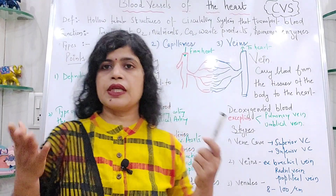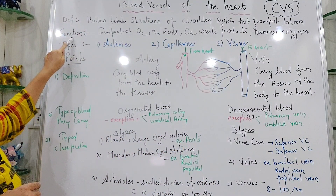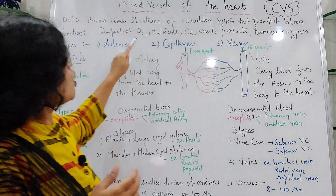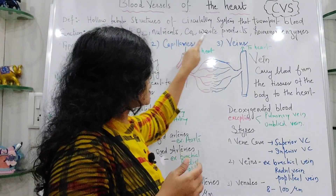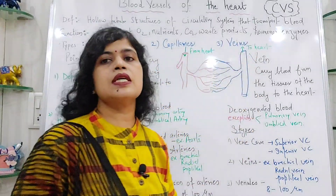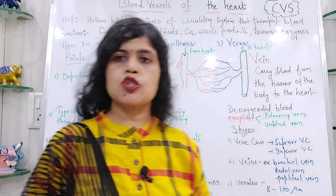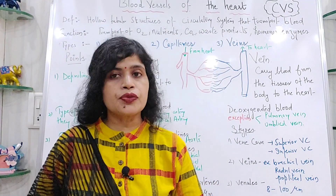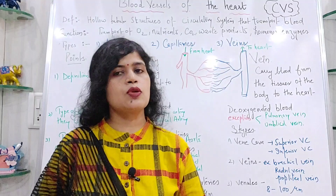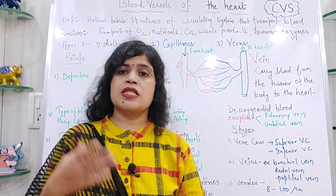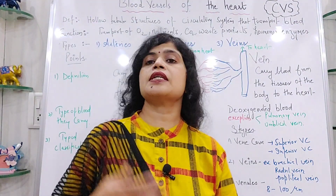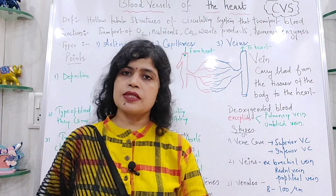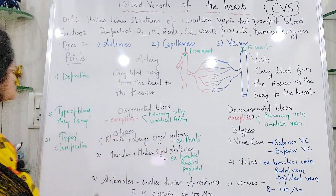The function of blood vessels is transporting oxygen, nutrients, carbon dioxide, waste products, hormones, enzymes, and much more. Our blood carries many nutrients such as glucose, amino acids, fatty acids, glycerol, as well as waste products, gases like oxygen and carbon dioxide, hormones, and enzymes — all of these are transported by the blood vessels.